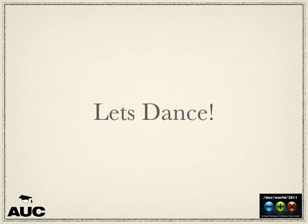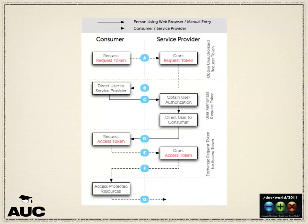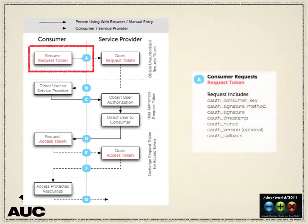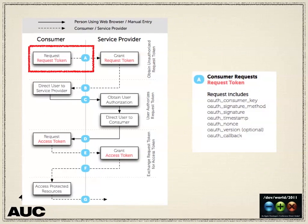It's called the OAuth dance because it looks a little bit like a dance. I'll go through it step by step so you know what's actually sent across every time you make one of these calls. The first step is started when the user wants to log in to your application or gain access to anything that's secured.